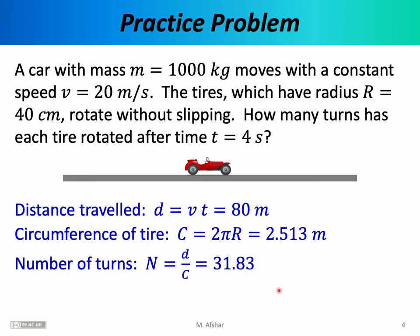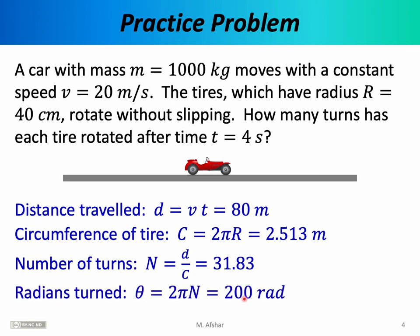This gives us 31.83 turns or revolutions of the tires. Going forward, we'll often use degrees or radians as our measurements for rotation, so we can convert this number to radians. We take n and multiply it by 2π, recognizing that there are 2π radians per revolution, which tells us the tires rotate through 200 radians in 4 seconds.